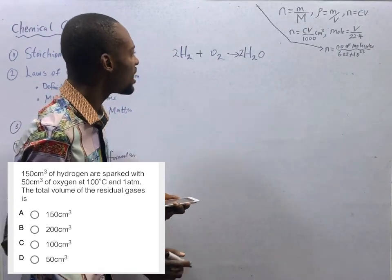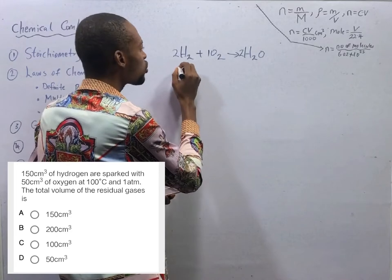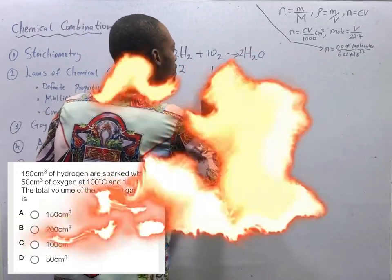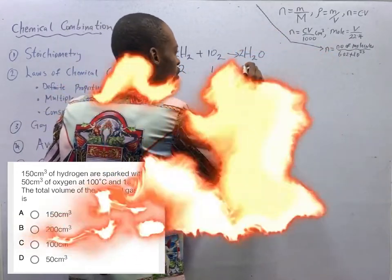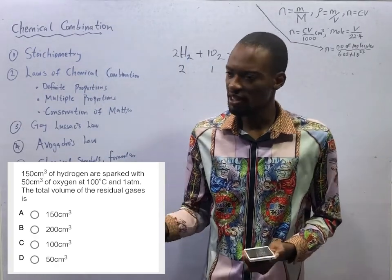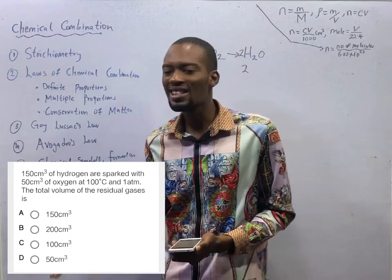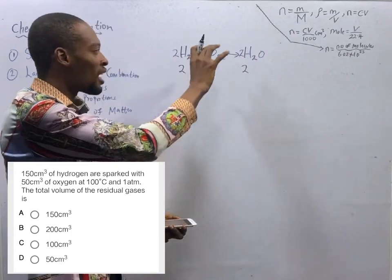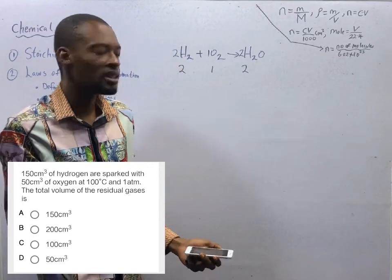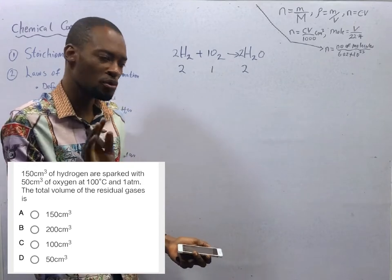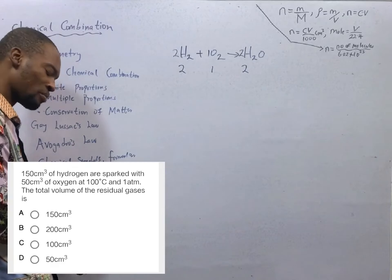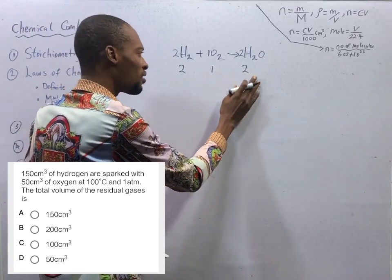Now, this means that 2 moles of hydrogen is required to spark with 1 mole of oxygen to give us 2 moles of water. And I told you that stoichiometry compares what should be and what is. What should be is the chemical, what should be is the formula. When you have a balanced equation, the mole ratio tells you what is supposed to happen. The mass also tells you what is supposed to happen. For the mass, remember I told you that mole can also be as mass. 2 moles, 2 ratio 1, ratio 2.